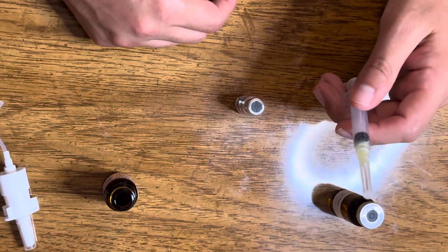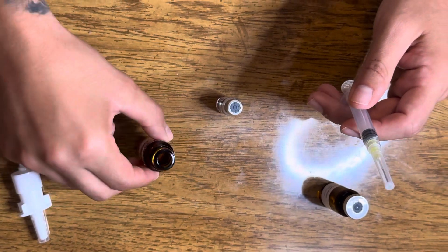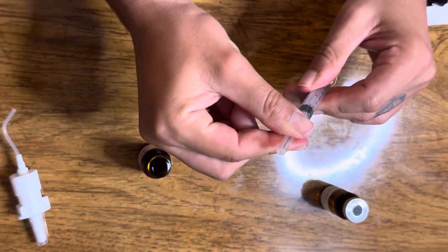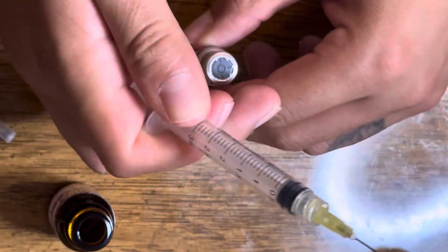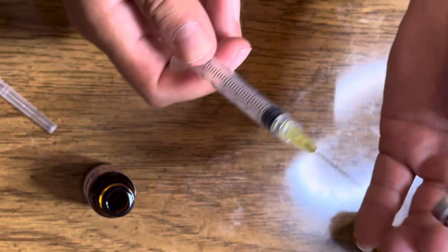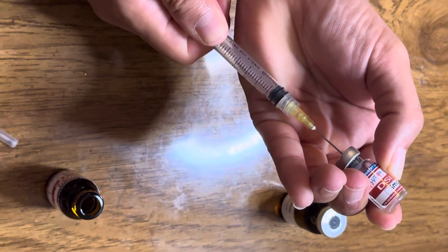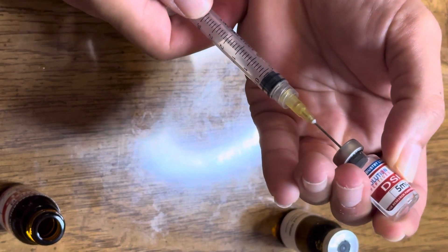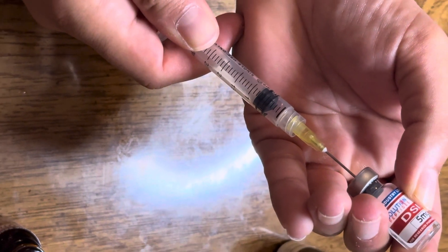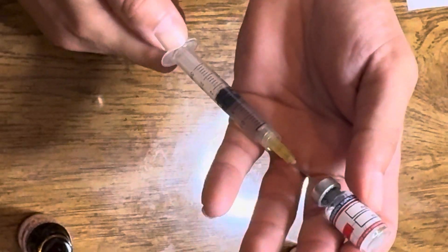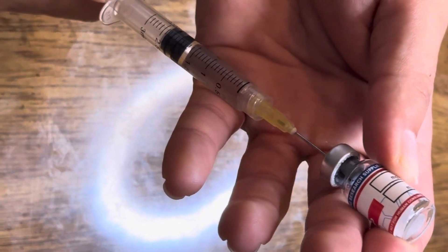The next step is going to be to draw this peptide into this vial. Cap it. You're going to do the same concept but in reverse. Poke it in, pull. Make sure you draw all the way through until there's no more liquid in your peptide.